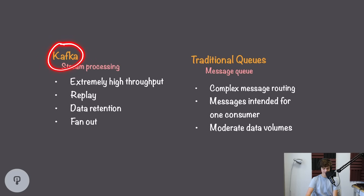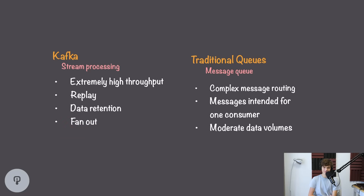Let's take a look at the main differences in their design. Kafka is inherently a stream processing system, designed for taking in a stream of events and sending them off to a bunch of different consumers. Kafka has very high throughput, and it keeps all the messages around until their time to live expires, so even messages that have already been consumed can still be replayed later. Kafka is also fanout by default, so if we have multiple consumers connected to the same queue, each consumer will get one copy of each record.